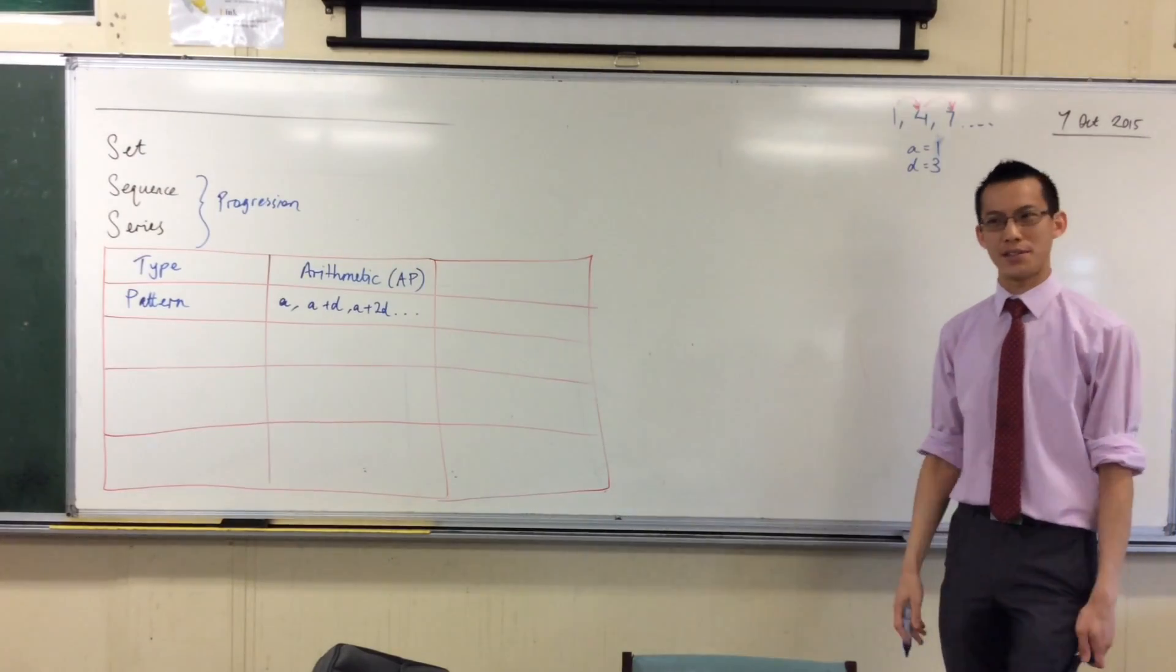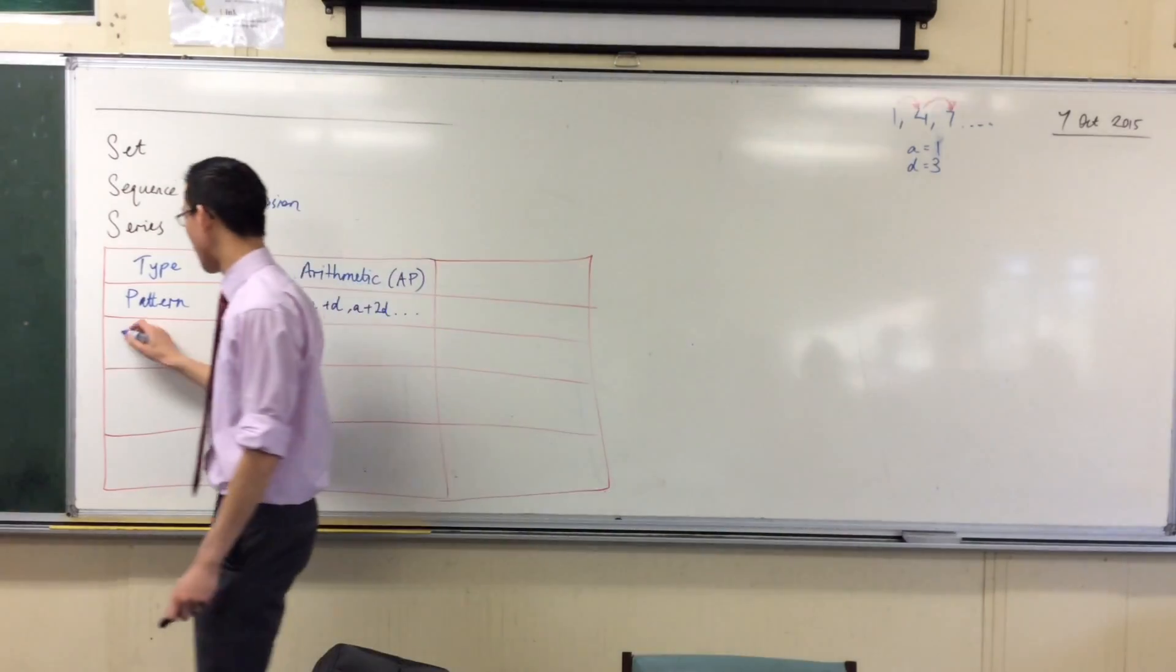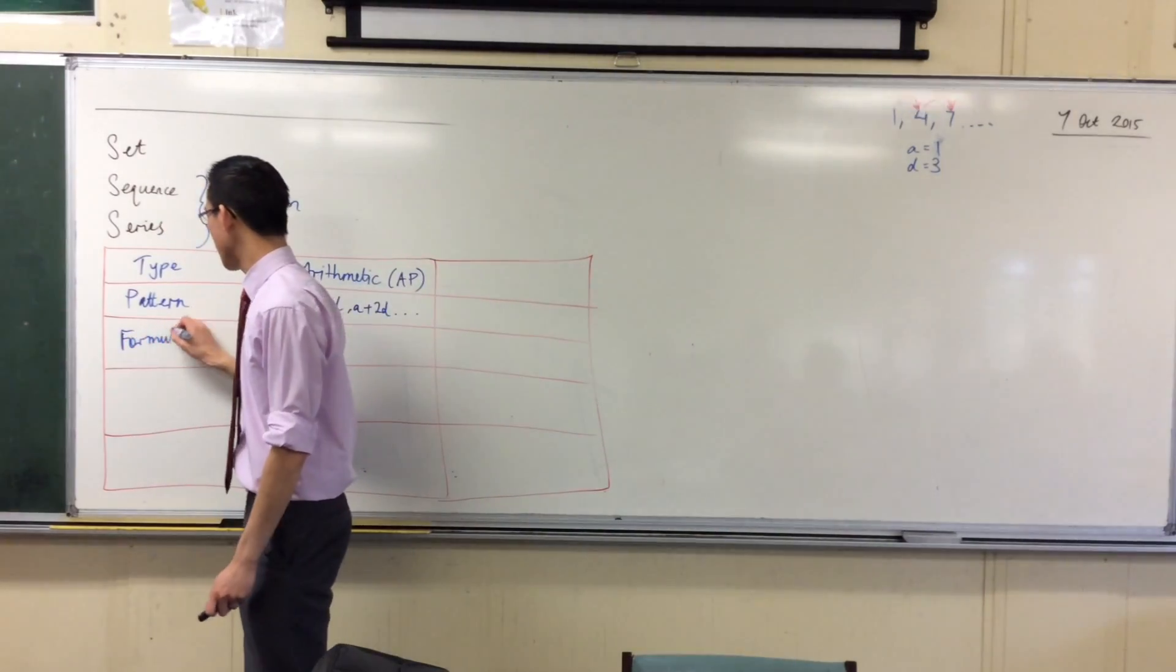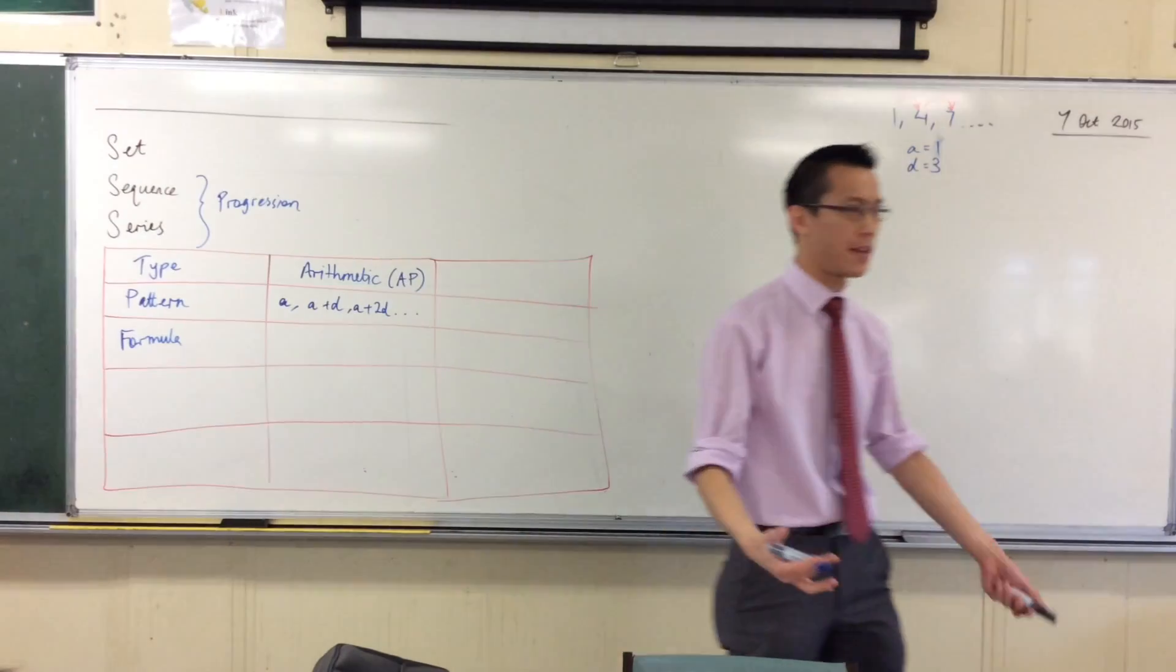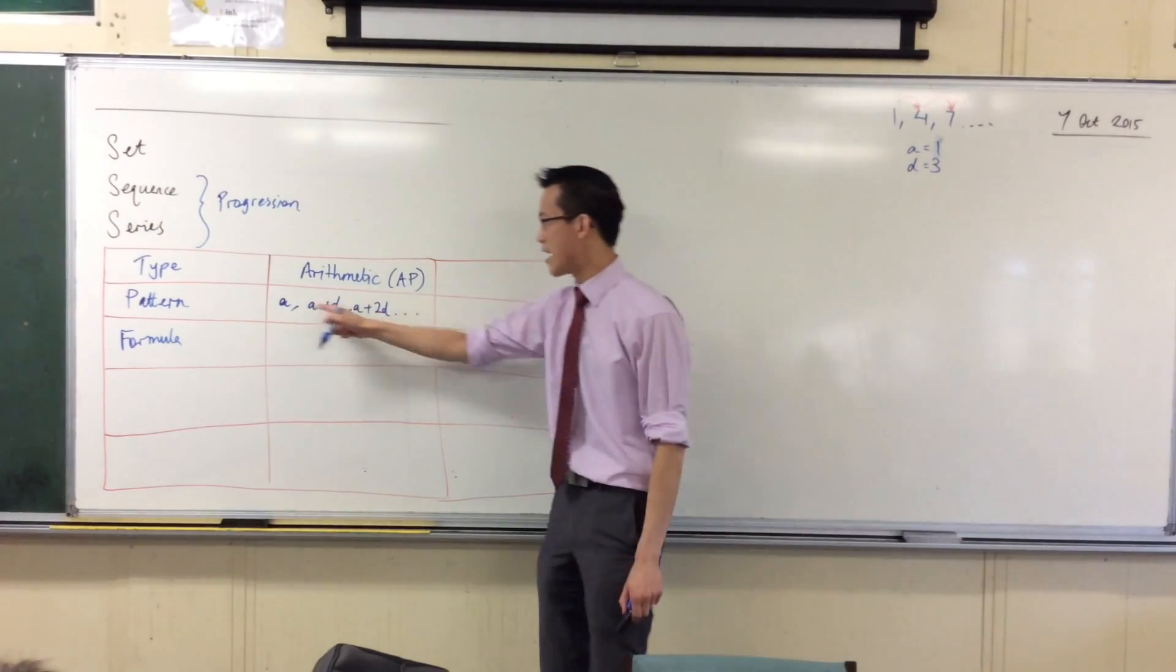But that wasn't the only way to define a sequence, right? What was the next way, after a pattern? Formula. We can use a formula. Can you tell me how to get directly to the nth term, in terms of n? Now, what's n in this case?